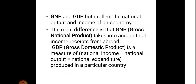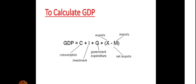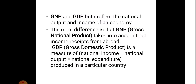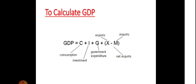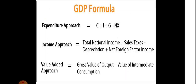GDP is a measure of national income, national output, and national expenditure. GDP represents the number of goods and services produced in a particular country. The three approaches to calculate GDP are: the expenditure approach, the income approach, and the value-added approach.